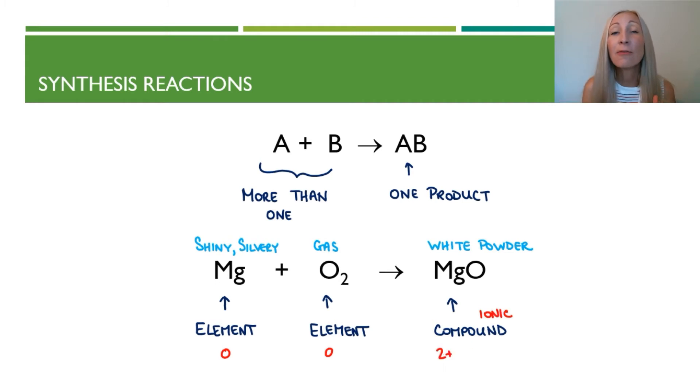When magnesium forms an ion, it has a positive 2 charge. When oxygen forms an ion, it has a negative 2 charge. When we combine these, we combine them at a 1 to 1 ratio to cancel out the charges. A positive 2 and a negative 2 means we only need one of each.